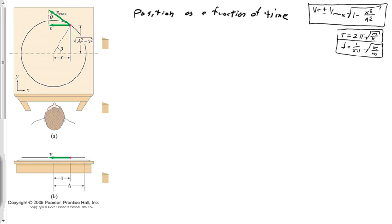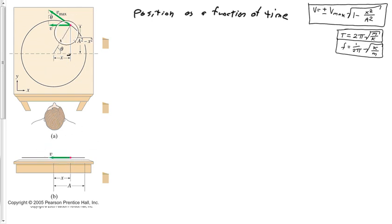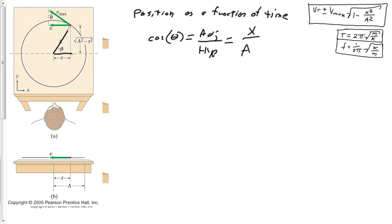Let's look at position as a function of time. Looking at the circular motion view from above, we have x — the displacement at any moment — and A, the radius of the circle, which is the maximum displacement. So x is the cosine of angle θ times A, since cosine θ equals adjacent over hypotenuse, which here is x over A. Solving for x: x equals A times cosine θ.